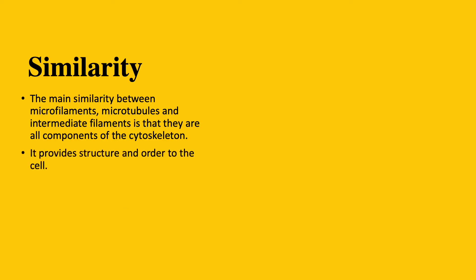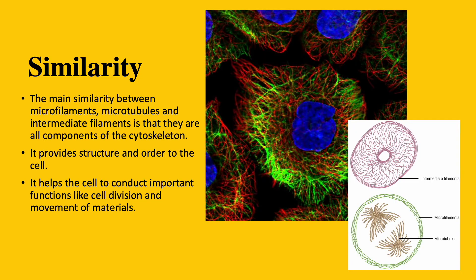The main similarity between microfilaments, microtubules, and intermediate filaments is that they are all components of the cytoskeleton. The cytoskeleton is a structure that helps the cell to maintain its shape. It provides mechanical support and keeps everything organized inside the cell. A variety of components work together to achieve these overarching functions.